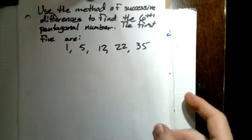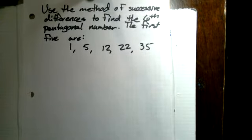So we're going to do one more problem. I want you to try and use the method of successive differences to find the sixth pentagonal number when the first five are 1, 5, 12, 22, and 35. Take a few moments, pause the video if you need to, and we'll look at this.